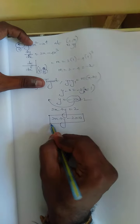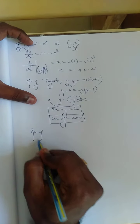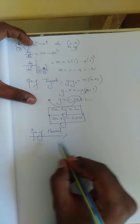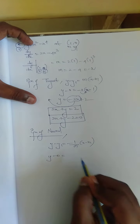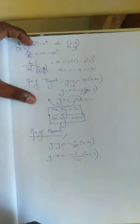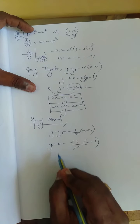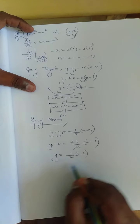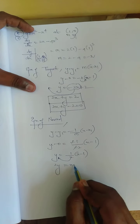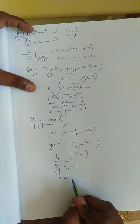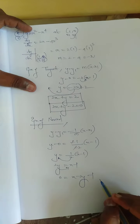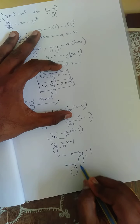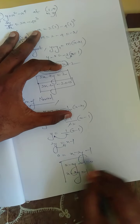We can also write it as 2x + y = 2. Next, equation of normal. The formula is y minus y₁ equals minus 1 by m into (x minus x₁). y₁ = 0, m = -2, x₁ = 1. The minus signs cancel, giving y = (1/2)(x - 1), so 2y = x - 1, which becomes x - 2y - 1 = 0, or x - 2y = 1. Both answers are correct.